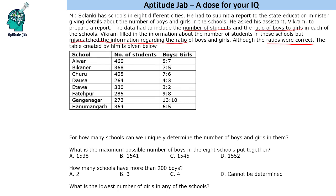The first thing is to add the ratios. So 8 plus 7 is 15. Then we have 12, 13, 7, 5, 17, 23, and 11 as the sums of the ratio parts.